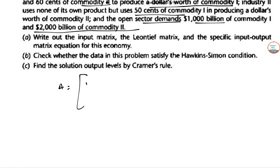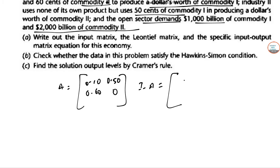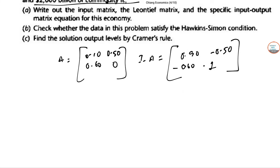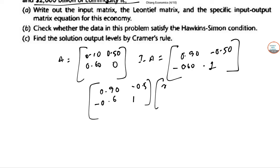So let A equal to the matrix with 0.10 in the appropriate entries. Next, in order to proceed we compute (I minus A). The final matrix (I minus A) will look like 0.9, -0.6, -0.5, 1, with input sizes X1 and X2 equal to 1000 and 2000.